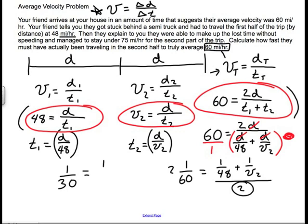1 over 30 is equal to 1 over 48 plus 1 over V2. I'm just going to clear a little board space real quick.